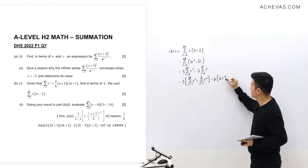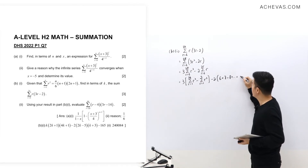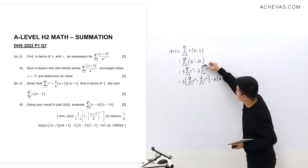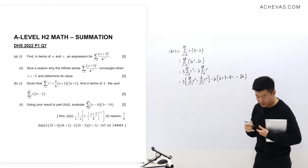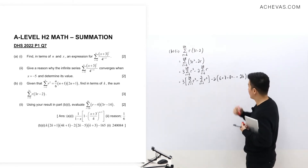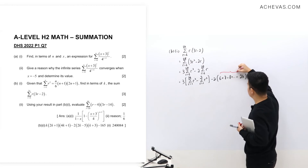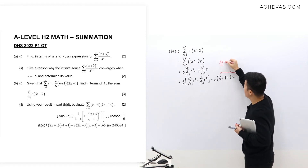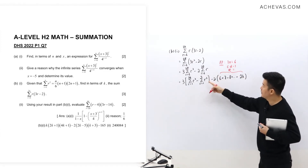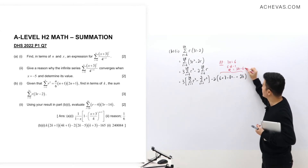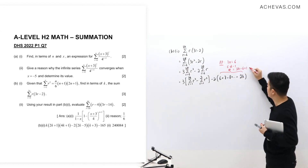For the arithmetic sum part, expanding from r=6 to 2k gives 6 + 7 + 8 + ... + 2k, which is an arithmetic progression. This AP has first term a=6, common difference d=1, and number of terms = 2k - 6 + 1 = 2k - 5.